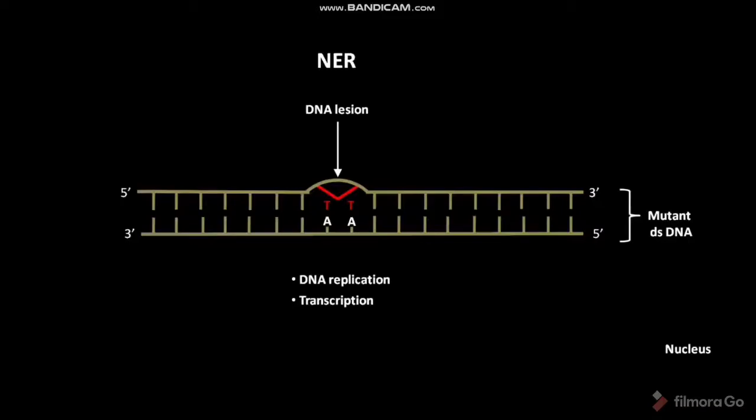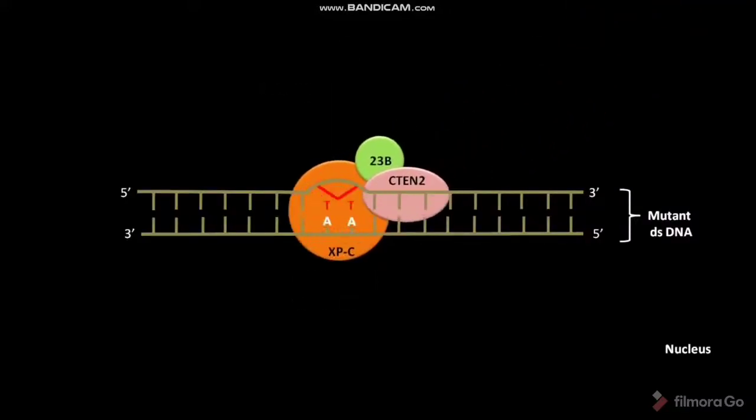The NER pathway requires about 30 proteins. In the first step, a protein complex containing XPC-23B and Centrin-2 recognizes the DNA lesion containing thymine-thymine dimer. XPC stands for Xeroderma pigmentosum C.